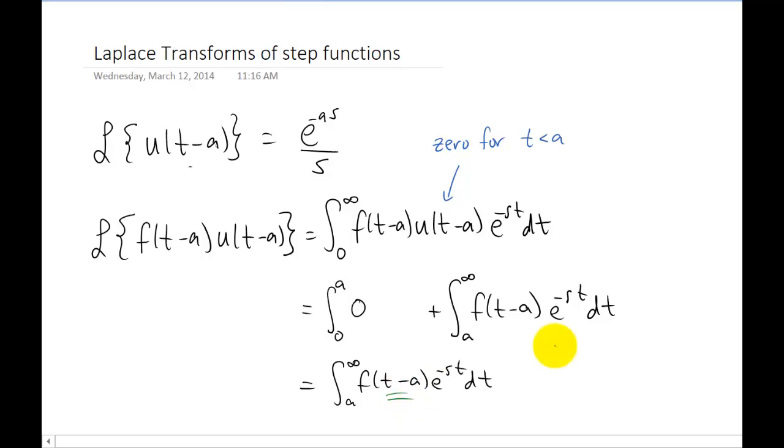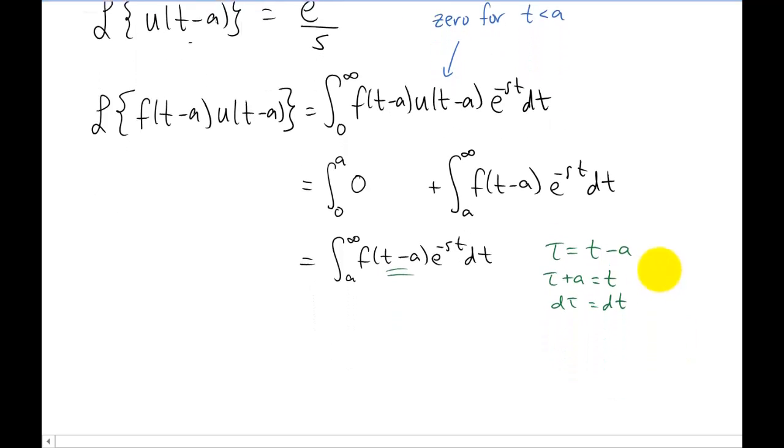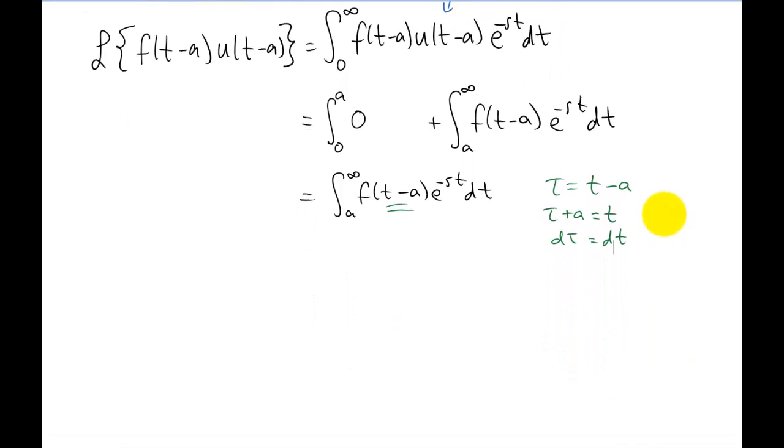Now this t minus a to me suggests that maybe we should replace t minus a with some variable. I'm going to call that new variable tau. And I'm going to complete the substitution replacing all of my t's with tau. So t minus a we replace with tau. t we replace with tau plus a. dt becomes dt tau.